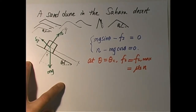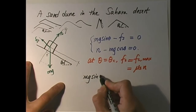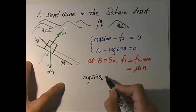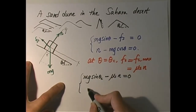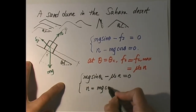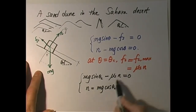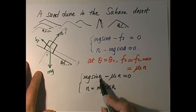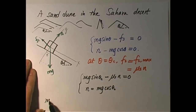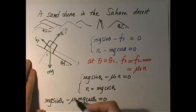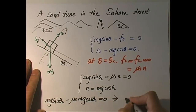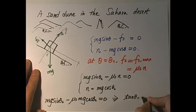Let's see what we get. I have Mg sine theta_critical minus Fs maximum, which is mu_s N, equals zero. The second equation is N equals Mg cosine theta_critical. Plugging that N in, I have Mg sine theta_critical minus mu_s times Mg cosine theta_critical equals zero. Cross out Mg and you get sine theta minus mu_s cosine theta equals zero, therefore tangent theta_critical equals mu_s. That is how we find the critical angle.